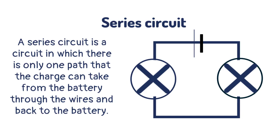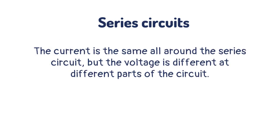A series circuit is a circuit in which there is only one path that the charge can take from the battery through the wires and back to the battery. The current is the same all around the series circuit, but the voltage is different at different parts of the circuit.